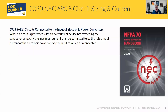Let's first look at the language in 690.8A2. This was new in 2020, and it's a pretty big deal. It's an allowance that people utilizing larger scale systems will really benefit from. This isn't going to have a big impact on residential applications, but for larger PV systems — especially ones where you're using combiner boxes or larger inverters with single inputs — this is something that could help save some wire sizing for your systems.